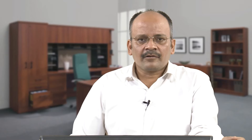Generally, if the water pH is known we can decide the coagulant. The optimum pH range for alum as a coagulant is approximately 5.5 to 7.7, with adequate coagulation possible between pH 5 and 9. With ferric salts, the wider pH range is 4 to 9. Pre-hydrolyzed metal salts such as polyaluminum chloride, polyaluminum sulfate, and poly iron chloride can be used in a wider pH range and are very common because they have more metallic ions per unit amount, enabling faster destabilization of colloidal particles.